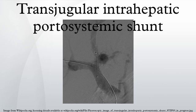The procedure was first described by Joseph Rosch in 1969 at Oregon Health and Science University. It was first used in a human patient by Dr. Ronald Colopinto of the University of Toronto in 1982, but did not become reproducibly successful until the development of endovascular stents in 1985.